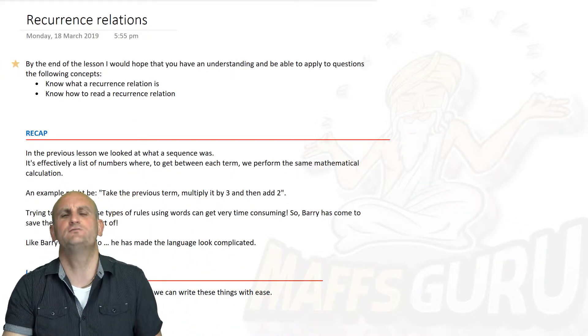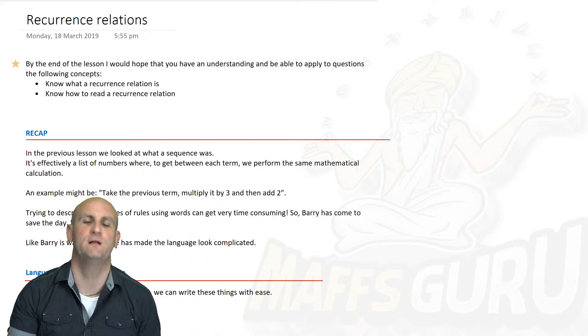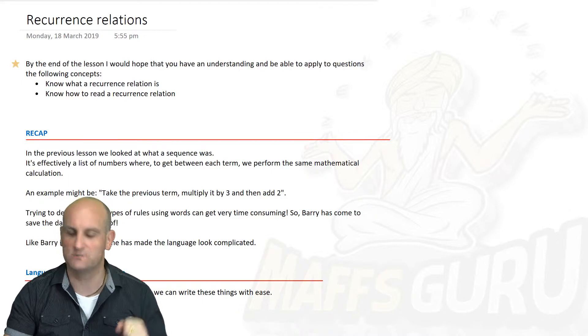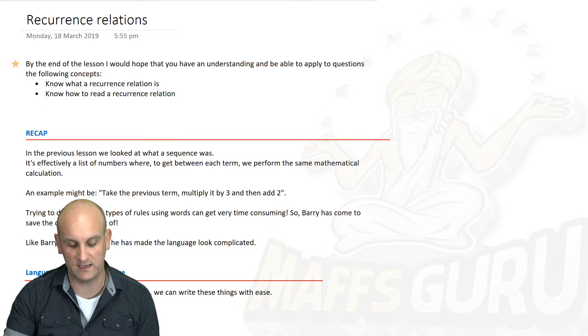Now, what on earth is a recurrence relationship? Why do we use such random language in mathematics? Well actually, you can blame Barry for that. Barry is this guy who I swear sits over here in Australia and makes things really, really complicated.